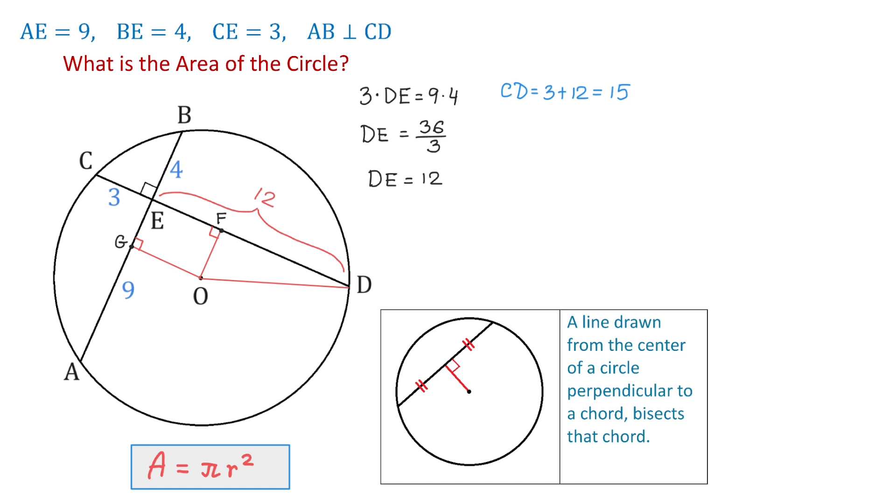Then, because this perpendicular bisects this chord, then DF will be half of 15. DF equals 15 divided by 2, which is 7.5. In the figure, I will write that DF is 7.5.